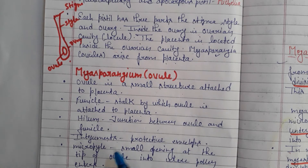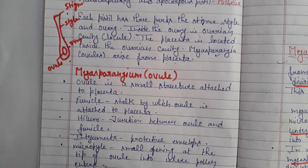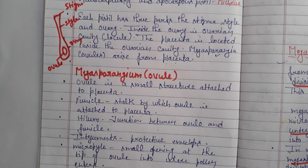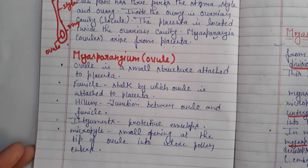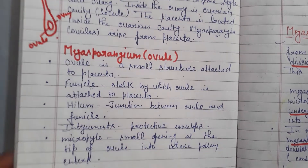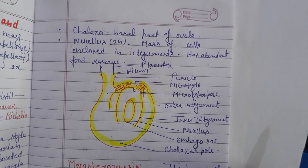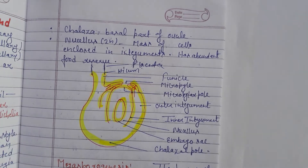The integument is the protective covering layer which protects against desiccation or damage — it is the protective envelope or layers. The ovule has two ends: the micropyle and the chalazal end. The micropyle is the end where the egg cell is present and the pore is open, allowing pollen to enter. The chalazal is the opposite, basal end.